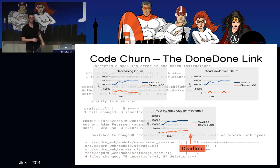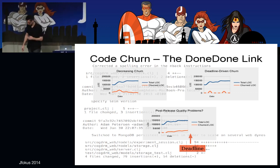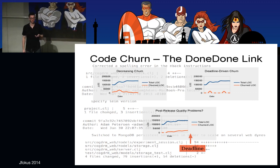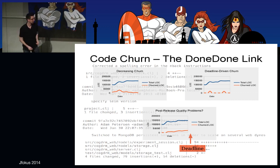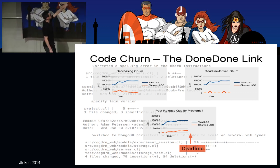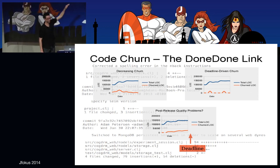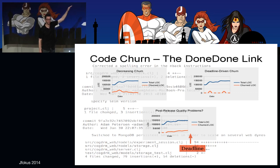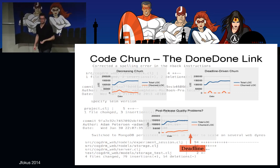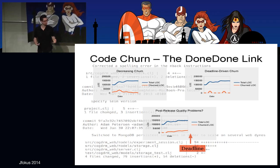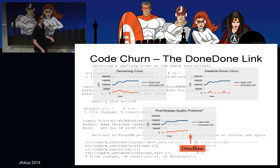Another pattern: code churn has been shown to be strongly correlated with the number of post-release defects. The higher the churn in a module, the more post-release defects. I use this as an early warning system: if I'm approaching a deadline and my churn is rising, I know I'm probably in for quite a nasty surprise — a lot of undiscovered bugs waiting for me, and that deadline is at risk.